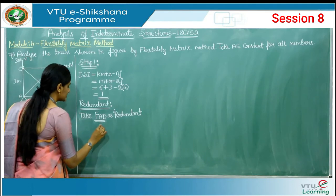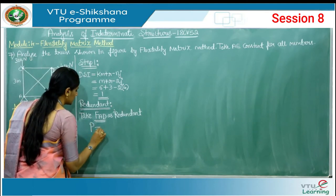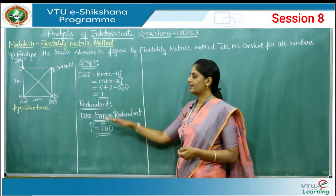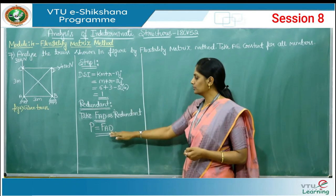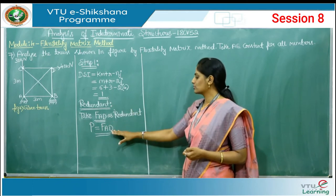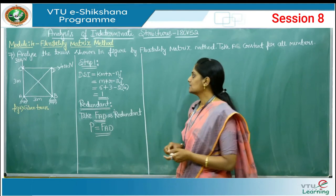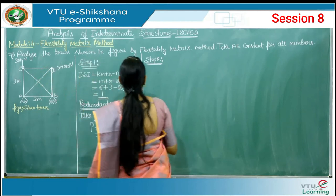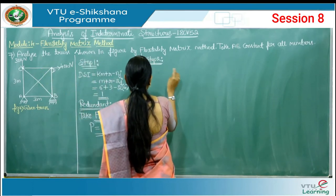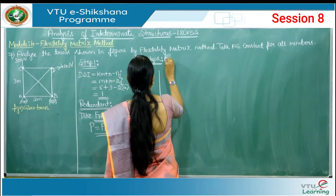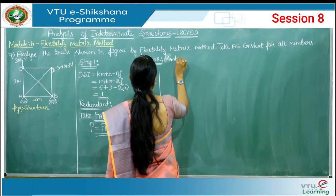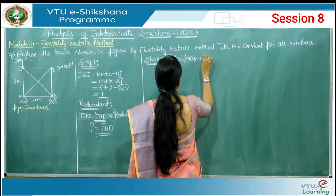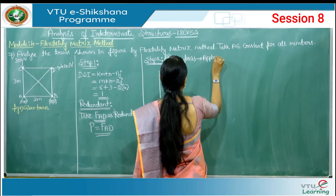We can call this as P, so P equals F_AD. This completes step number one — finding the degree of static indeterminacy and assuming the suitable member force as redundant. Now in step number two we are going to calculate the forces in all the members because of the applied loading, which we call member forces due to applied external load.